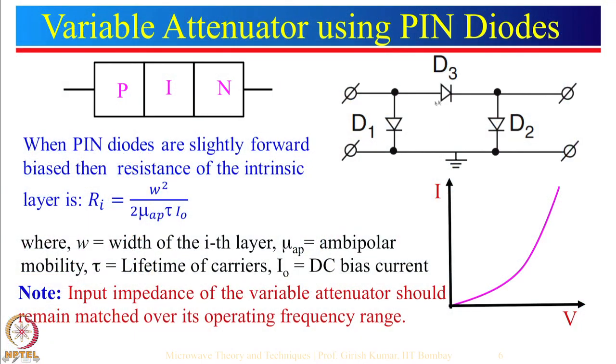If the diode is completely forward-biased, the current will be relatively constant and will not provide a variable attenuator or variable resistance. In the next lecture, another application of PIN diodes will be covered — as switches: when completely forward-biased it acts like a switch on, and when completely reverse-biased it acts like a switch off. We can change the resistance of D1, D2, D3 by providing an external biasing circuit, which will be shown when discussing PIN diode switches.